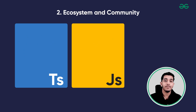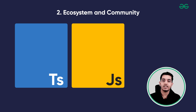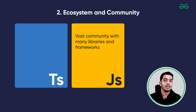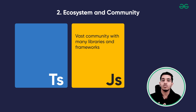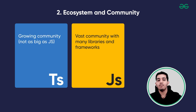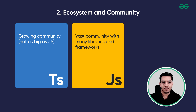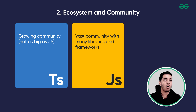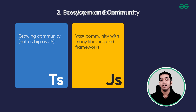Number two: ecosystem and community. JavaScript has been the language of web development for many years and has a vast ecosystem with numerous libraries and frameworks. This popularity ensures a large and active community, making it easier to find solutions to problems and resources for learning. TypeScript has been gaining popularity steadily, and many JavaScript libraries and frameworks now include TypeScript typings. The TypeScript community is also growing and it has become a popular choice for larger projects, but JavaScript has a bigger community.